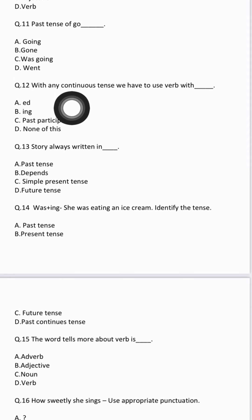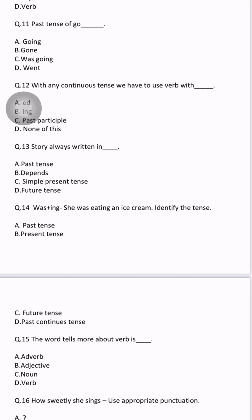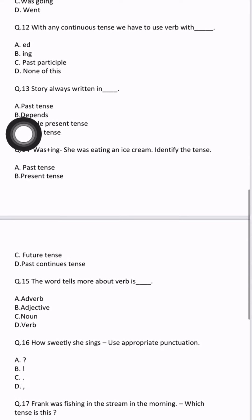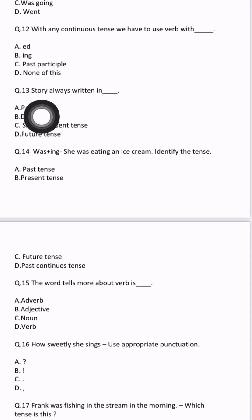Question number 12: with any continuous tense, we have to use verb with -ing. If any tense has 'continuous' in its name — present continuous, past continuous, future continuous — we use the -ing form of the verb. Go becomes going, take becomes taking, make becomes making. So with any continuous tense, we use verb with -ing.